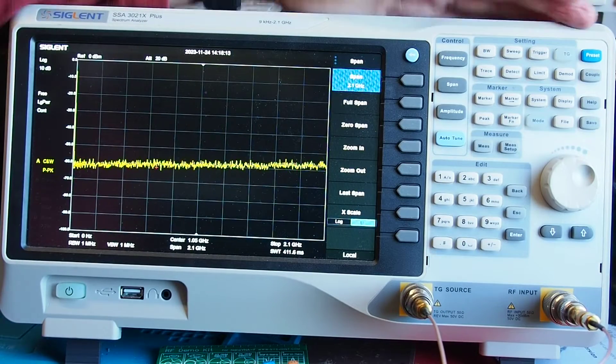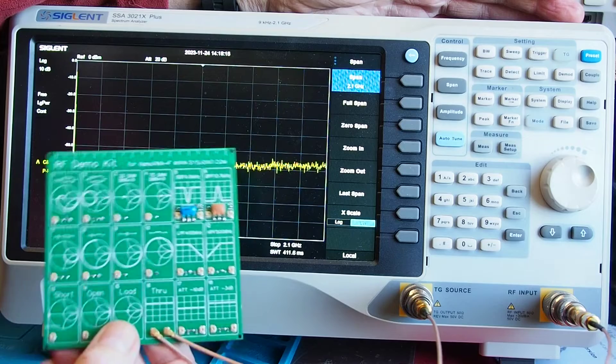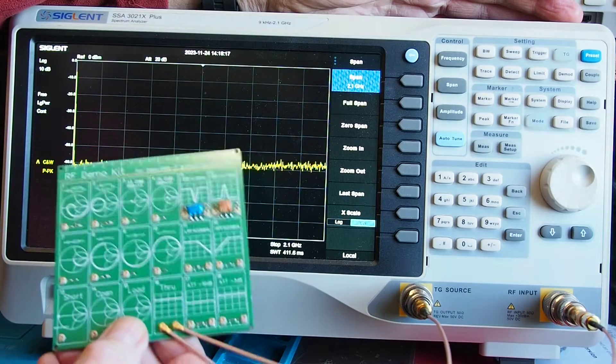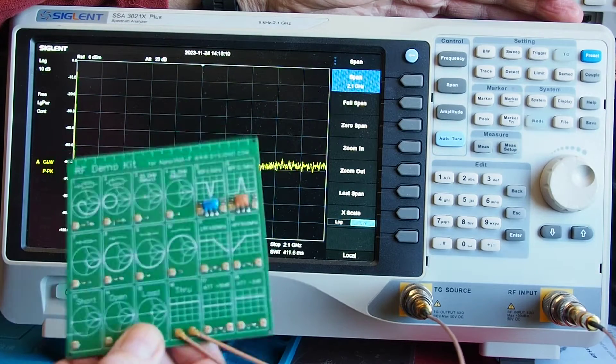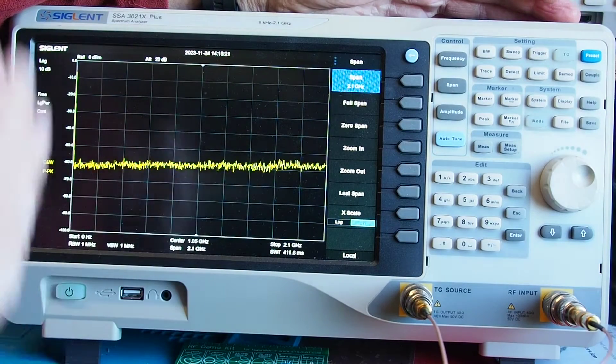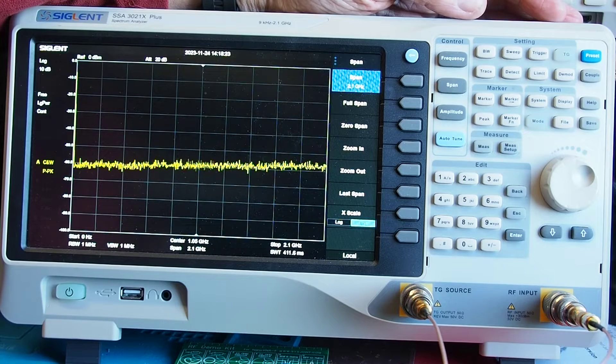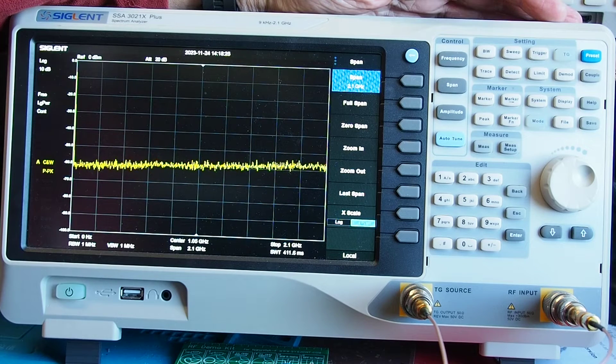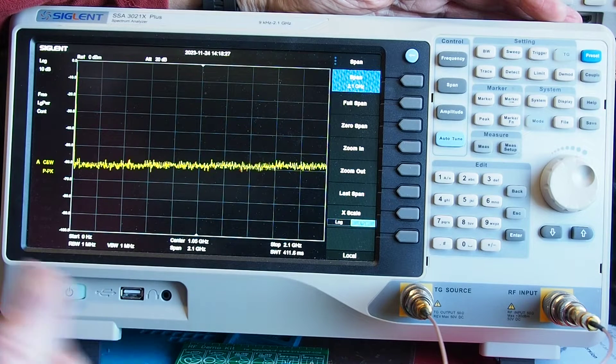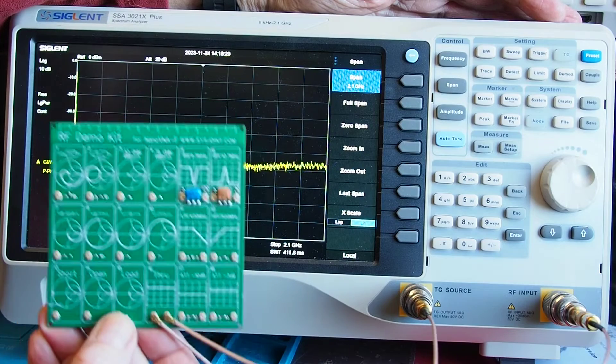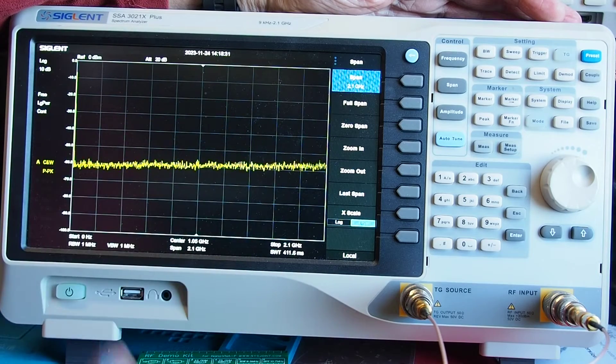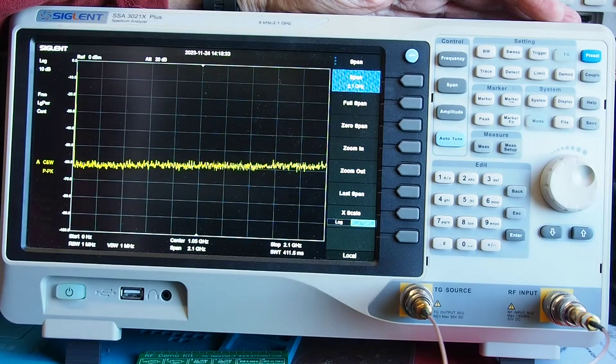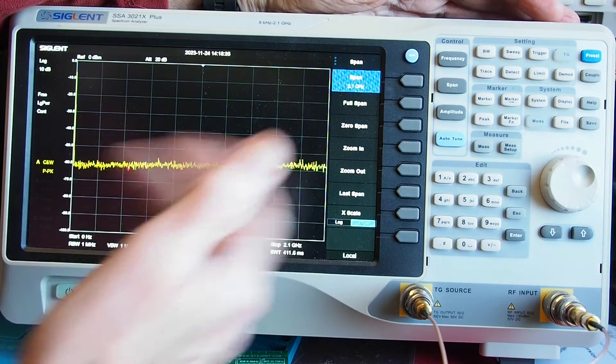Okay so here we are back again with the spectrum analyzer and I've got it attached to the RF demo kit. Come back to what I'm going to do with that in a moment. Last time we used the RF noise bridge to provide us with a broadband RF signal that we could feed through the filters on the board and then we could view the output on the trace on the display here.